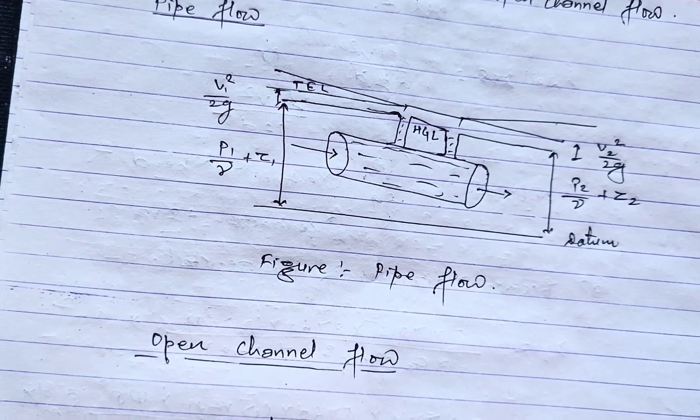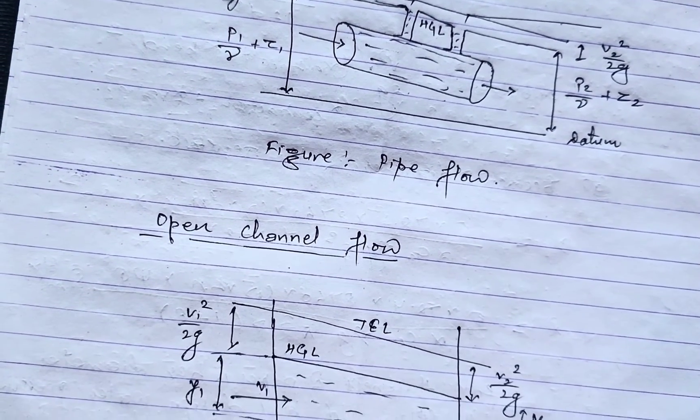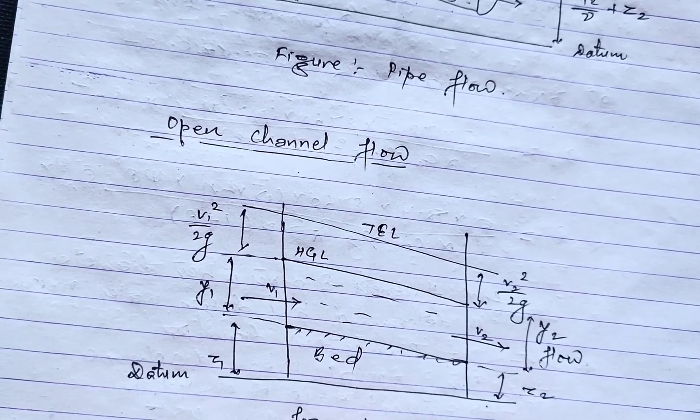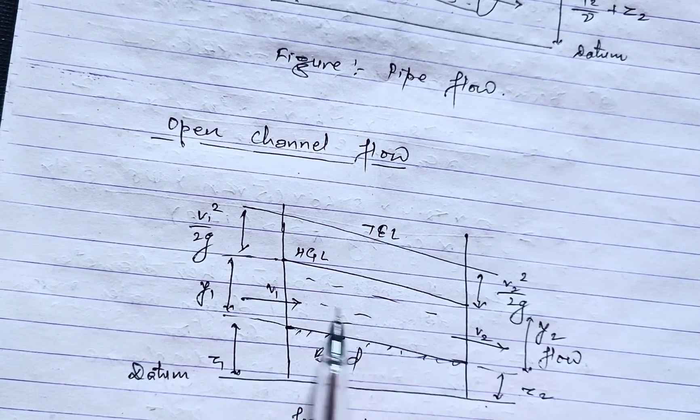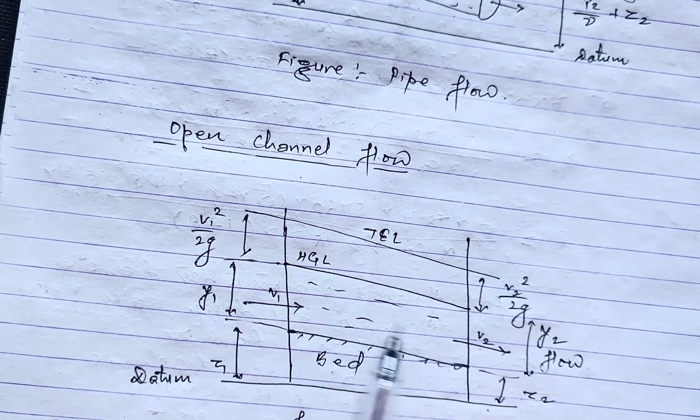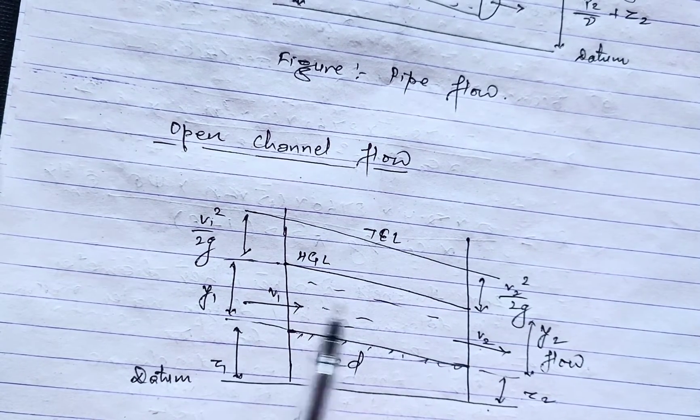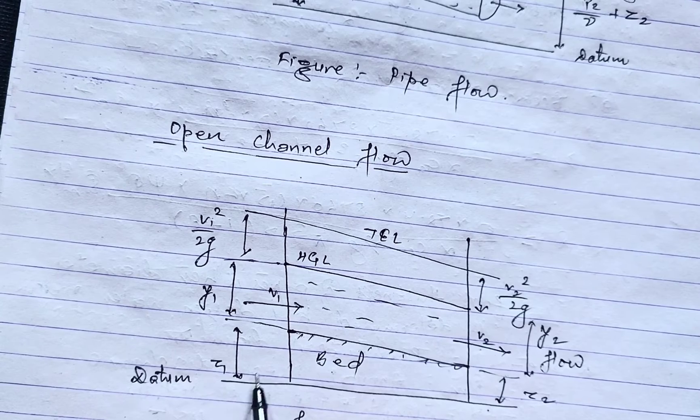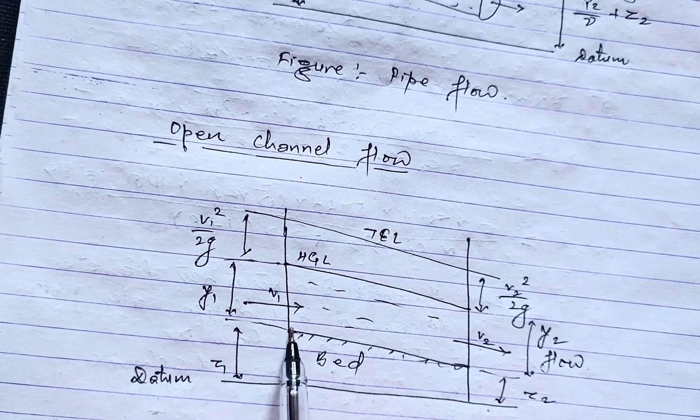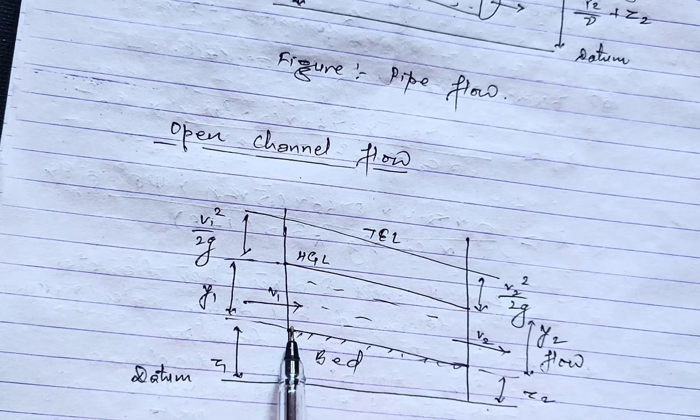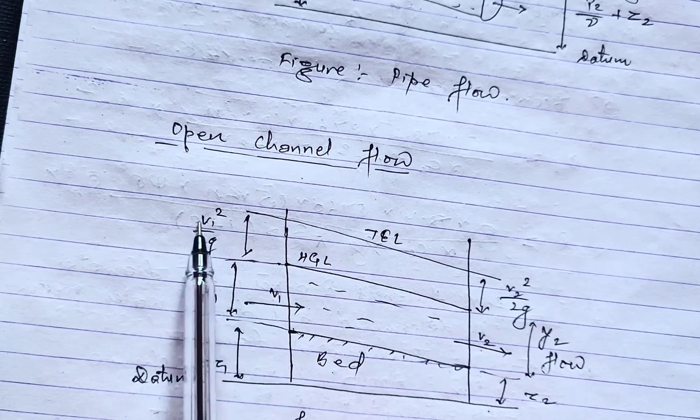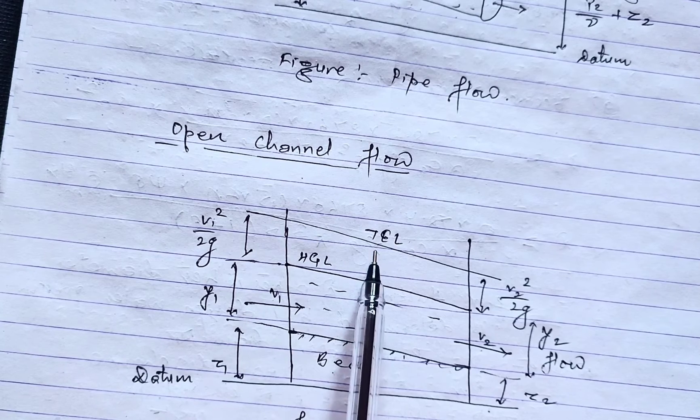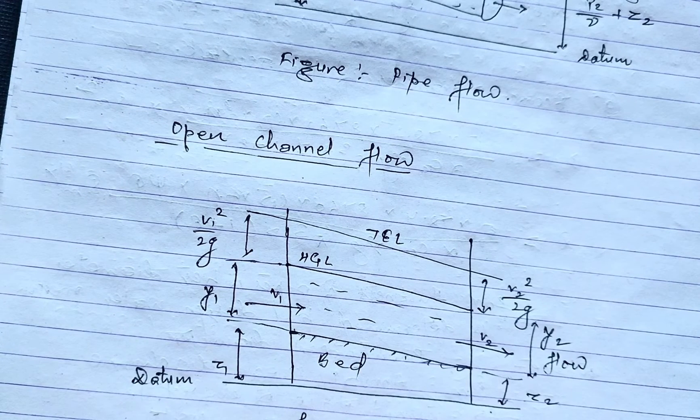In the same way, here we have shown the open channel flow figure. Flow occurs where from p1 to p2, this is the z height from the datum to the bed slope of the channel and this one is the y up to hydraulic gradient line, and this one is v1 squared by 2g from total energy line.